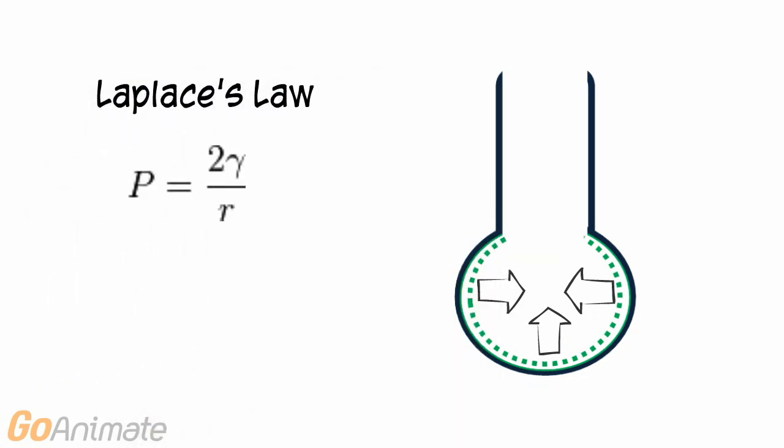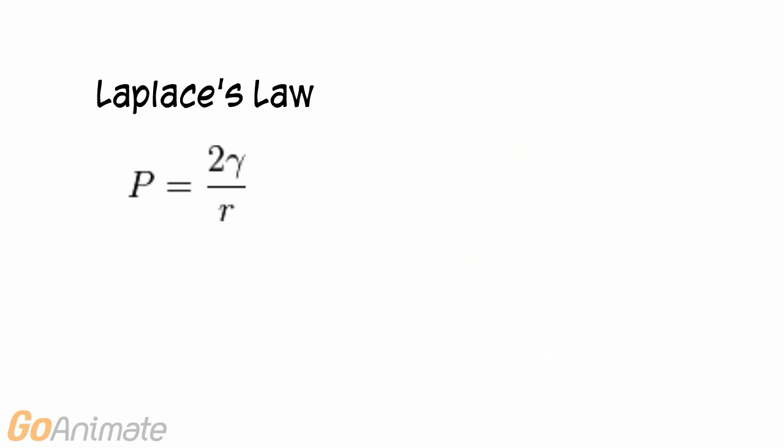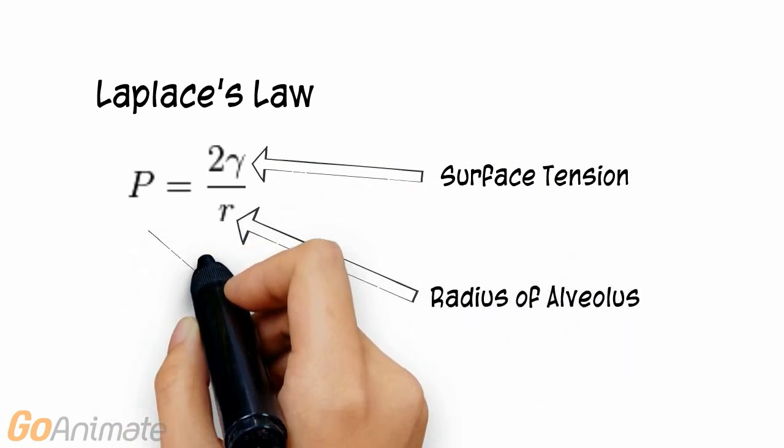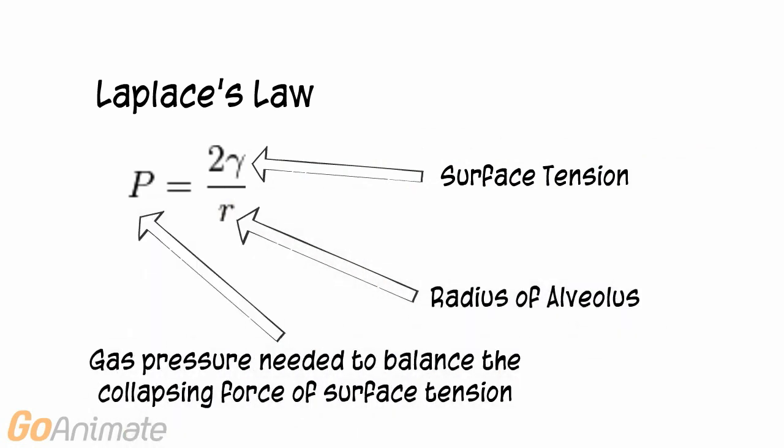Laplace's law describes the relationship between the gas pressure needed to balance the surface tension and the radius of a curved surface such as a sphere. The gas pressure must balance the collapsing force of the surface tension.